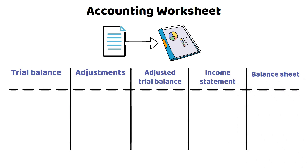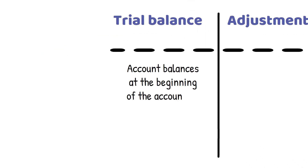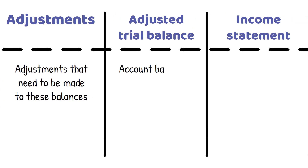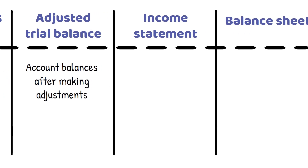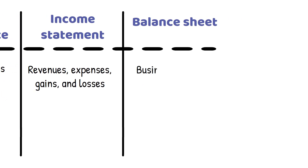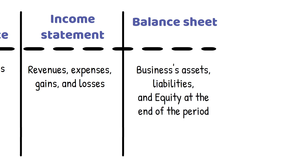The Trial Balance column lists all the account balances at the beginning of the accounting period. The Adjustments column lists any adjustments that need to be made to these balances, such as accruals or deferrals. The Adjusted Trial Balance column lists the account balances after adjustments. The Income Statement column shows revenues, expenses, gains, and losses for the period, and the Balance Sheet column shows the business's assets, liabilities, and equity at the end of the period.